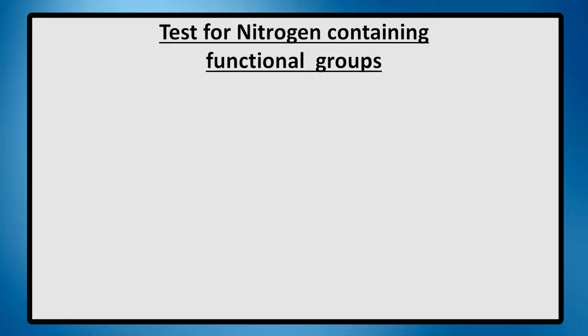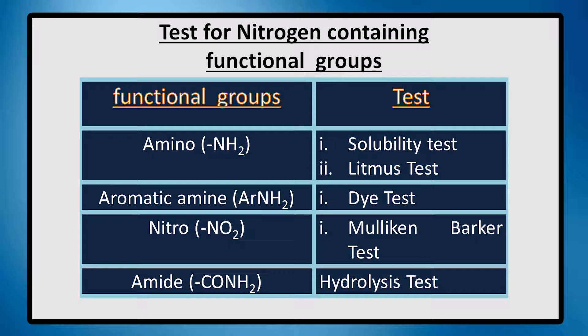During the Lassine test, if we get nitrogen-containing functionalization, the Prussian blue test is positive. Then we go for the nitrogen-containing functional tests. We will test for the amino group using a solubility test and litmus test. For aromatic amine, we do the dye test. For nitro group, we perform the Mulligan-Barker test. For amide group, we perform the hydrolysis test.